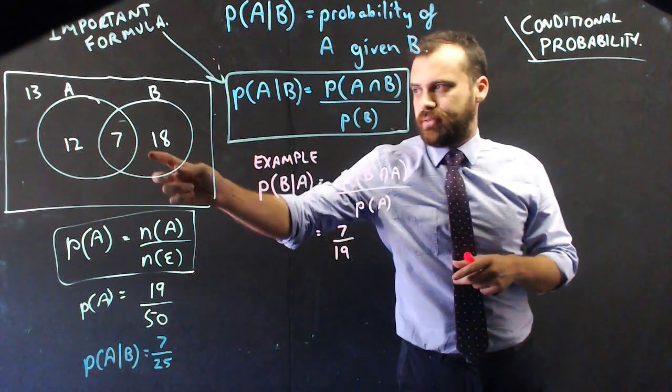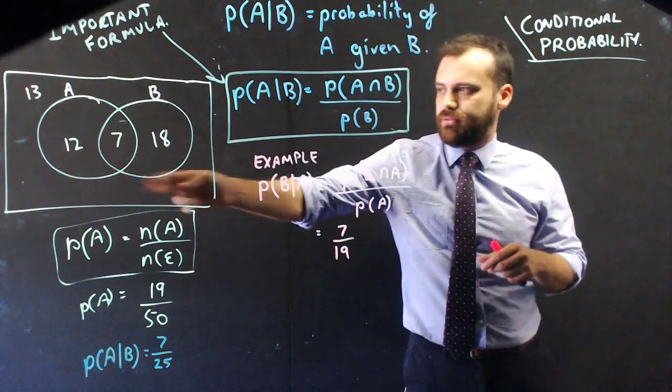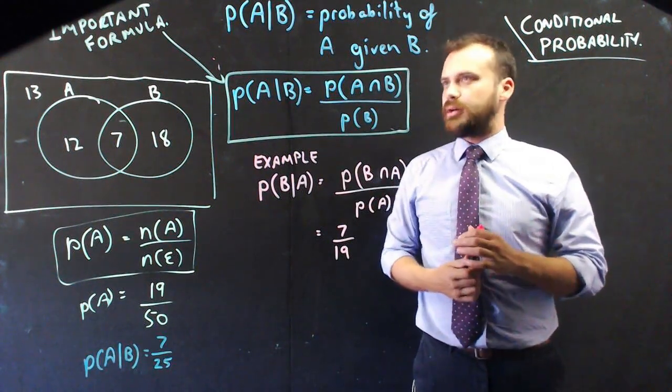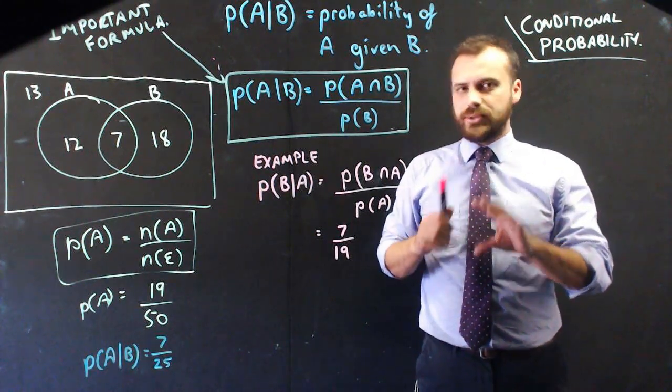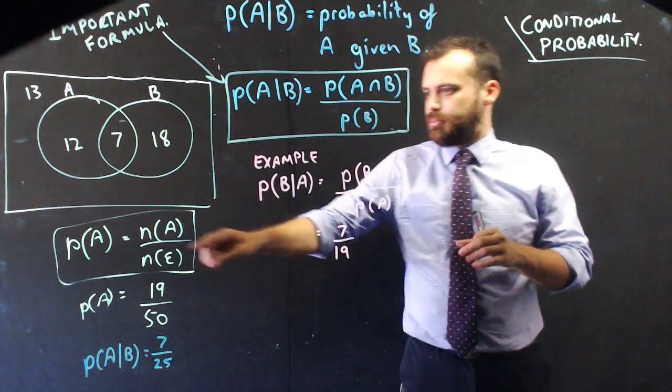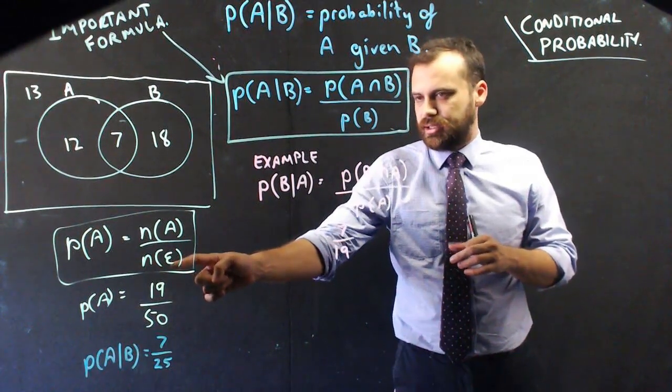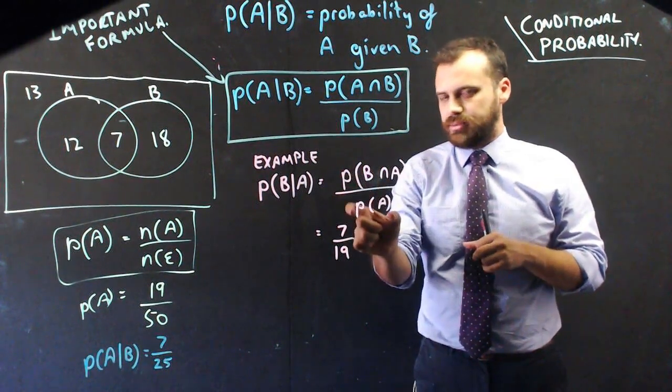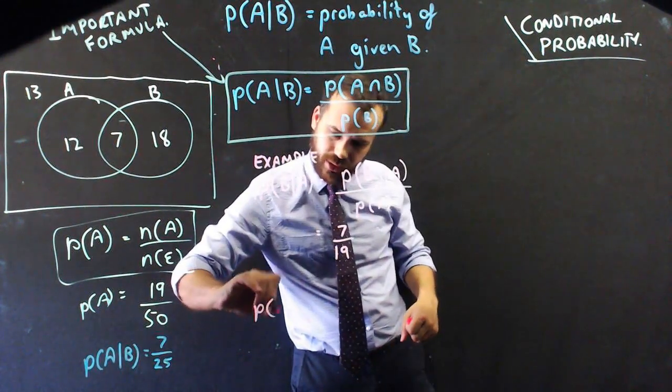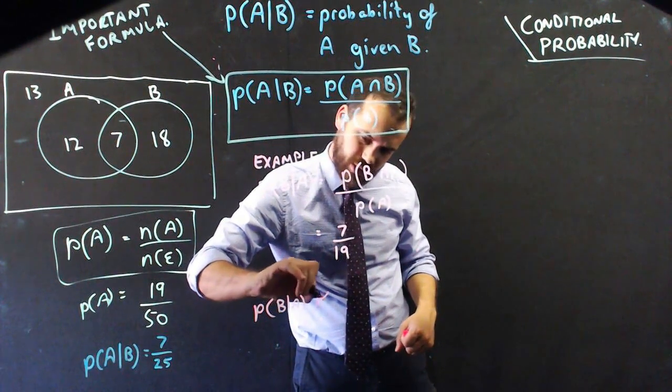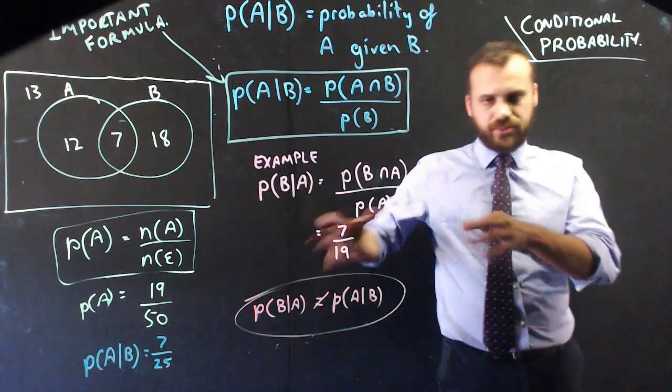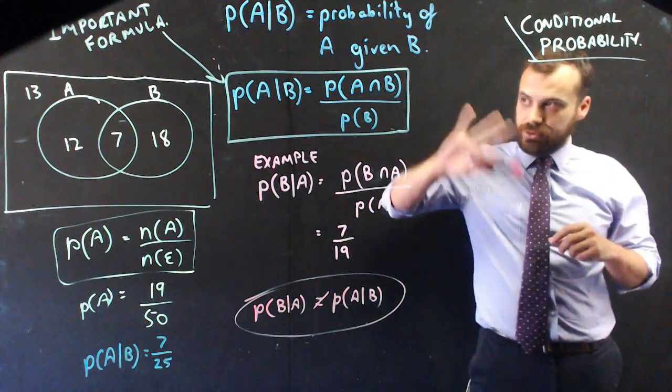But whether it's numbers—7, 12, 18—or probabilities—0.2, 0.5, 0.7—we can still use those exact rules. That's a good start to conditional probability. As long as you understand that conditional probability is decreasing the size of our sample space from being the universal set to being a smaller subset of that—B in this case, A in this case. It's also important to note: probability of B given A is not necessarily equal to, and usually isn't, A given B. That's very important to note so you don't make that mistake. Conditional probability—that's a good starting point.